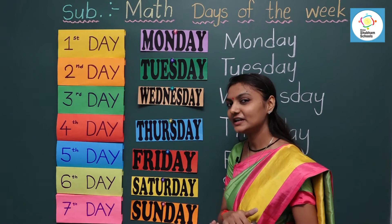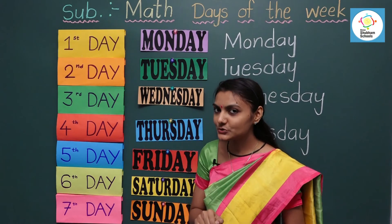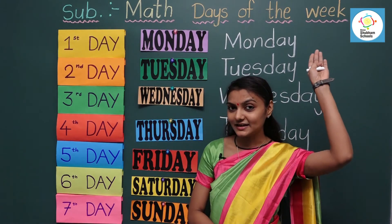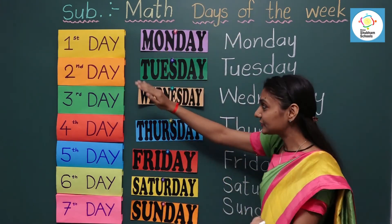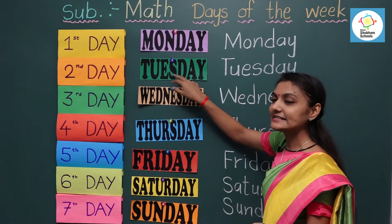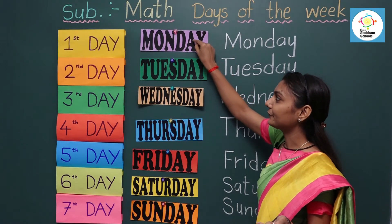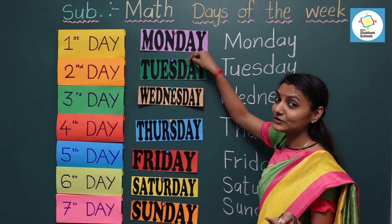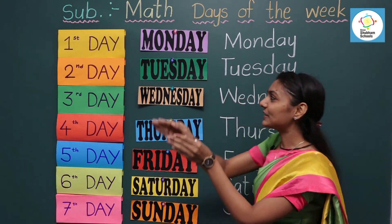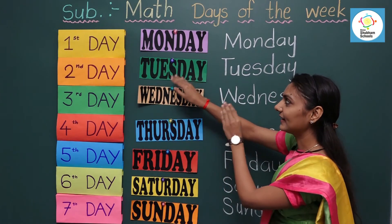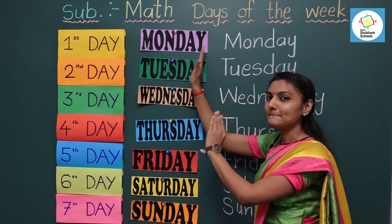Sunday is the last day of the week. Suppose I ask you: if today is Tuesday, then which day was yesterday? Yesterday means a day before. Now which day comes before Tuesday? Yes, it's Monday. So the answer is: if today is Tuesday, then yesterday was Monday.